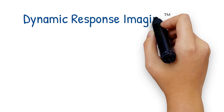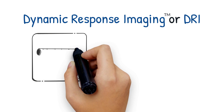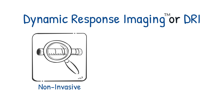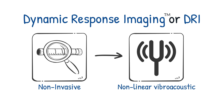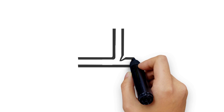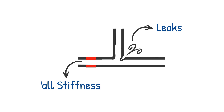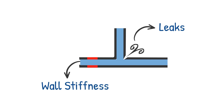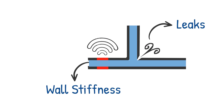Dynamic Response Imaging, or DRI for short, is a non-invasive and external pipeline condition assessment method based on proven non-linear vibroacoustic inspection techniques. DRI detects and locates leaks and localized changes in pipe wall stiffness, which is a direct indicator of a pipe's remaining strength and ability to perform under a load.